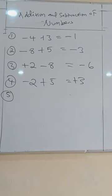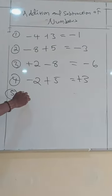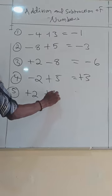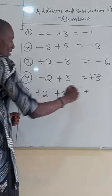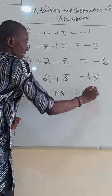Number 5, what if the signs are the same? When you have plus 2 plus 8, when the signs are the same, you add. You pick one of the signs. 2 plus 8 is what? 10.